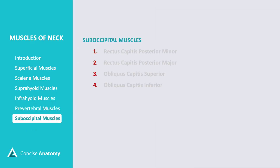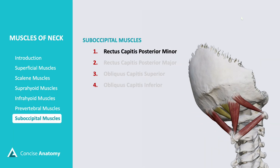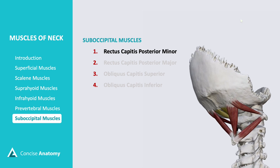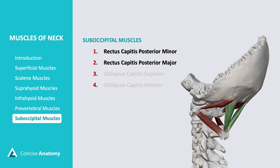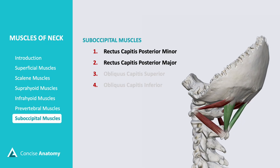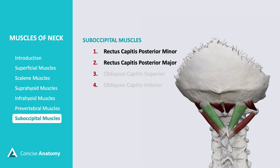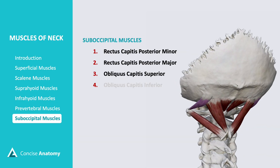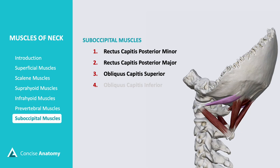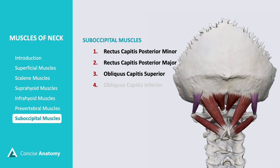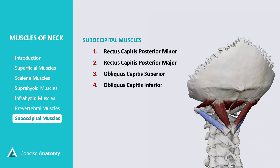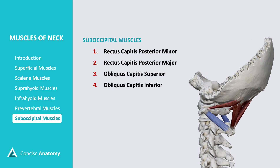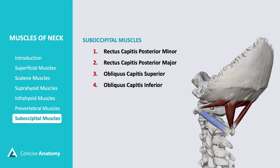The suboccipital muscles are a small group of deep muscles located at the base of the skull. Rectus capitis posterior minor extends from the atlas to the occipital bone, aiding in head extension and fine motor control. Rectus capitis posterior major runs from the second cervical vertebra, or axis, to the occipital bone, assisting in head extension and rotation. Obliquus capitis superior extends from the transverse process of the atlas to the occipital bone, contributing to head extension and lateral flexion. Obliquus capitis inferior connects the spinous process of the axis to the transverse process of the atlas, playing a key role in head rotation.